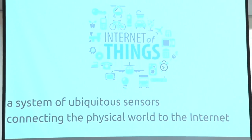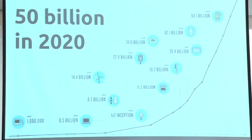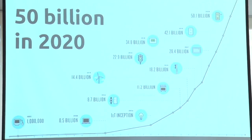IoT, or the Internet of Things, is a system of ubiquitous sensors connecting the physical world to the Internet. And that makes me think, how do we store that data? How do we process it? And who does all that? IoT is growing. There are going to be 50 billion devices in 2020, and that's a lot of data to store and to manage. At MapAnything, we're getting into DevOps and AWS to scale our IoT product.